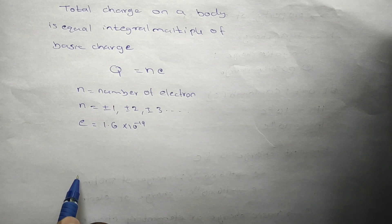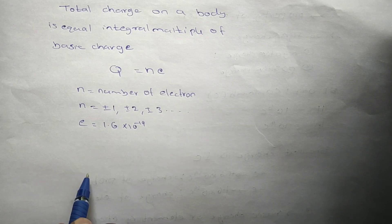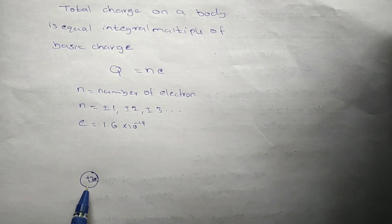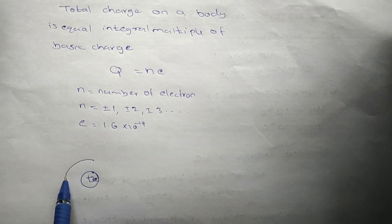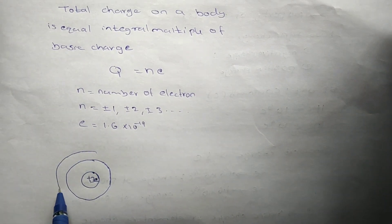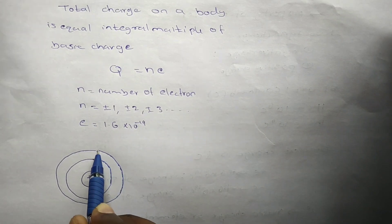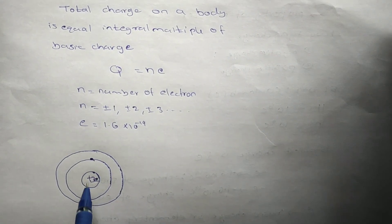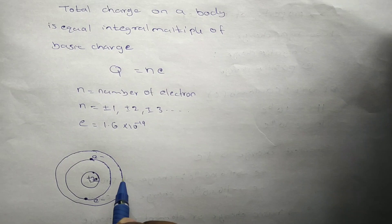Consider a lithium atom. Inside the nucleus there is a plus 3 charge, meaning there are 3 protons, so the charge of the nucleus is plus 3e. One proton's charge is plus e. And there are 3 electrons outside, each with charge minus e, so the atom is neutral overall.